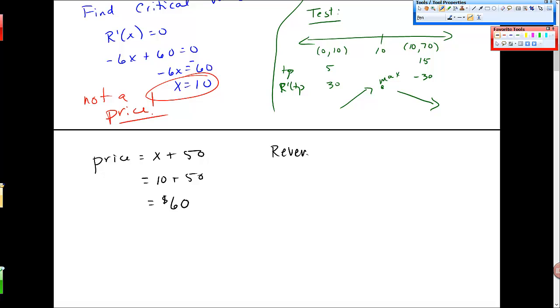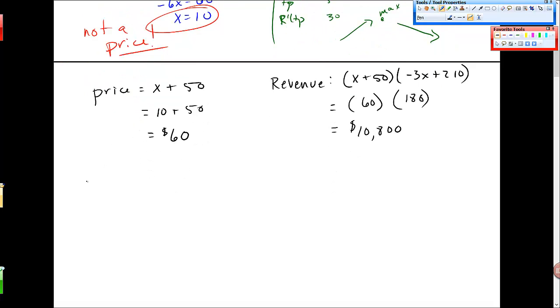And then max revenue at that price, I can plug 10 into the revenue equation, which was x plus 50 times negative 3x plus 210, I think. And then I'll get 60 here, because I have 10 for x. And then negative 30 plus 210, I think, is 180. Is that right? Yep. And so I need a zero. And then that times 60 gives me a revenue of around $10,000, or not around, but $10,800. So the price that maximizes revenue is $60. Maximum revenue is $10,800. Okay?